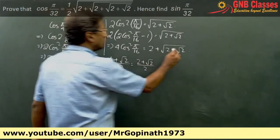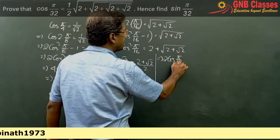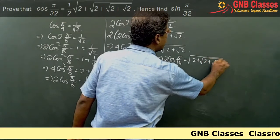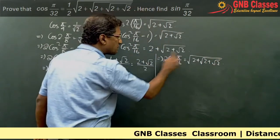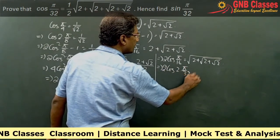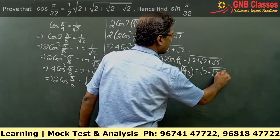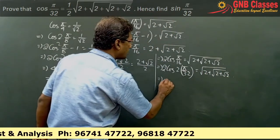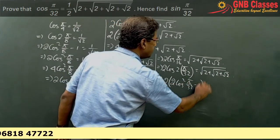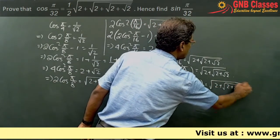From here we can write 2cos(π/16) = √(2 + √(2 + √2)). Again writing cos(π/16) using the double angle formula, and applying 2cos²(π/32) − 1 = √(2 + √(2 + √2)).